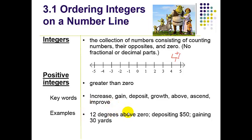Here are a couple of examples: 12 degrees above zero, depositing $50, and gaining 30 yards, especially in football.